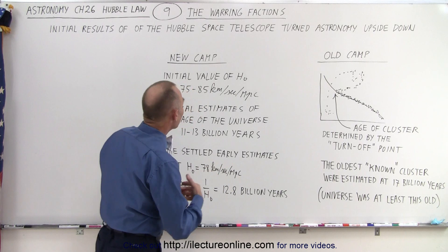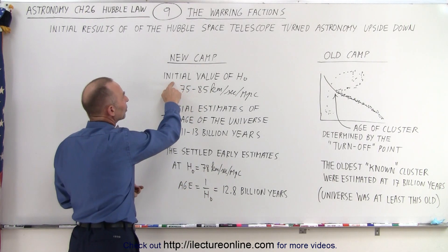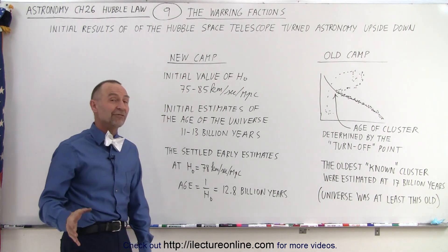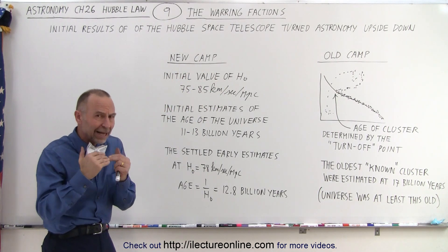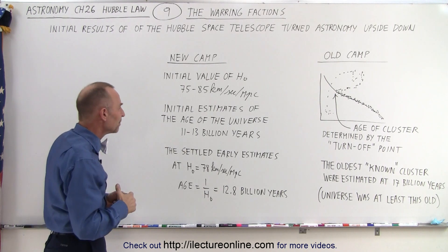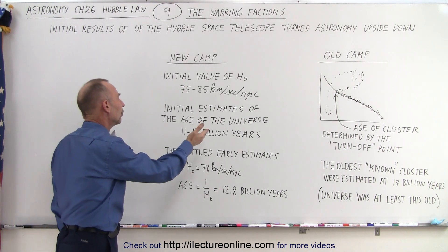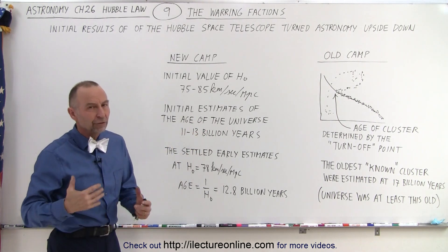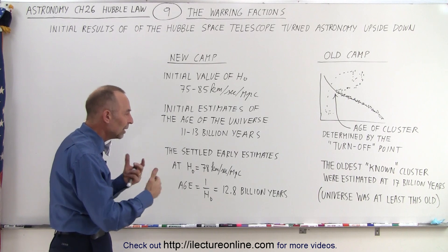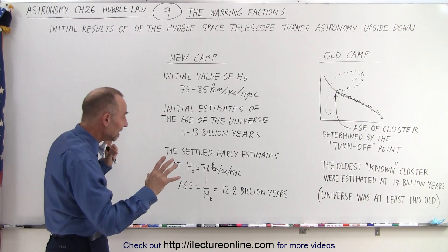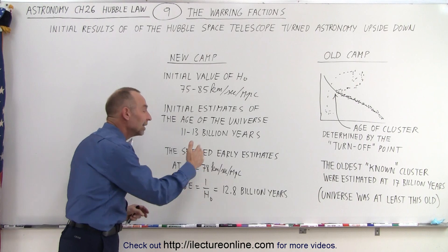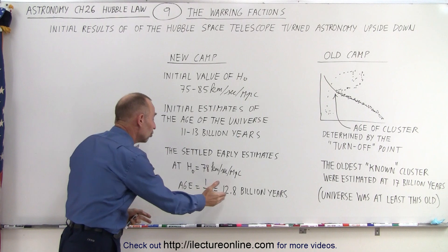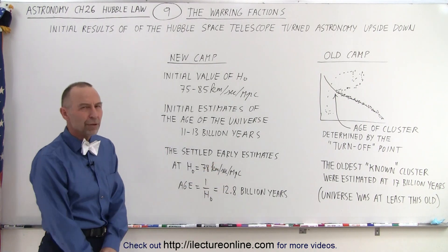When the data came back from the Hubble Space Telescope, the initial value of the Hubble constant ranged somewhere between 75 and 85 kilometers per second per megaparsec — a little bit higher than we expected. The initial estimates of the age of the universe ranged between 11 and 13 billion years old. After more time to work through the numbers, they settled on a Hubble constant of around 78 kilometers per second per megaparsec, which gave an age of the universe of 12.8 billion years.